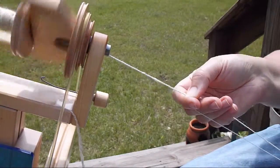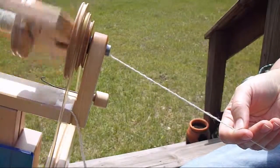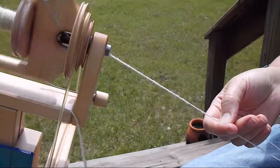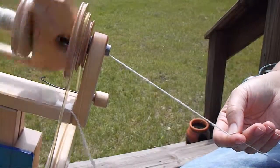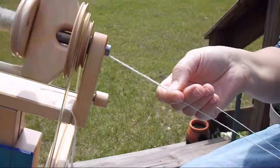A woolen yarn is traditionally made from hand-carded rolag that have been drafted against the twist. You're capturing the fiber in the twist as you're pulling back against it.